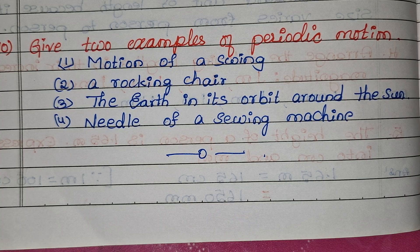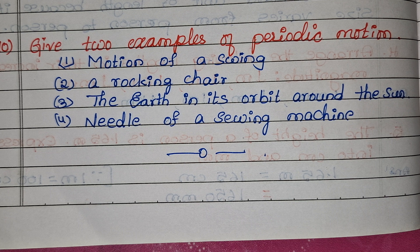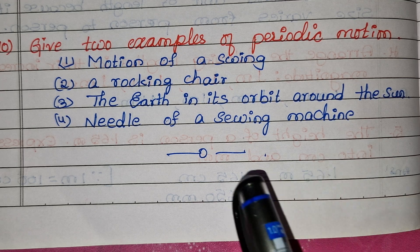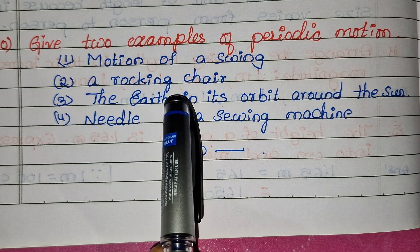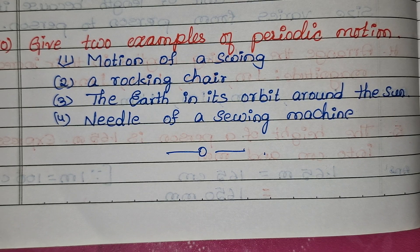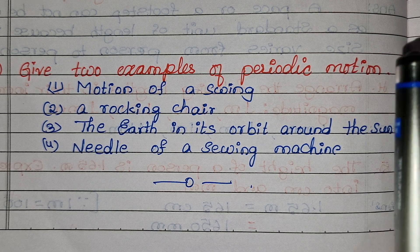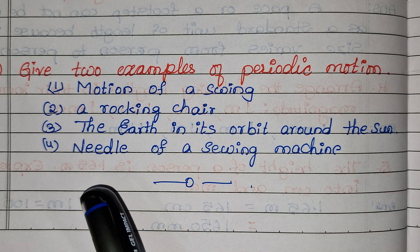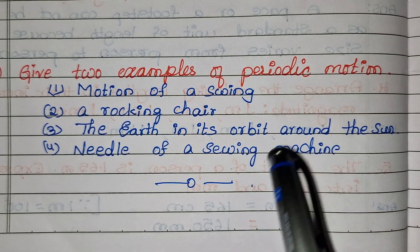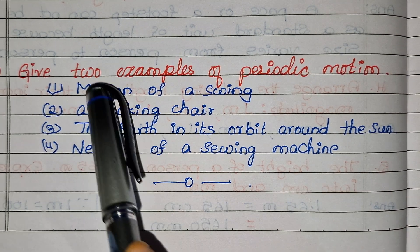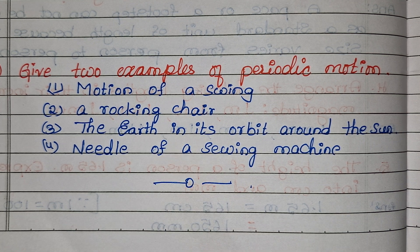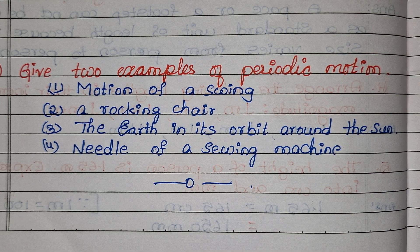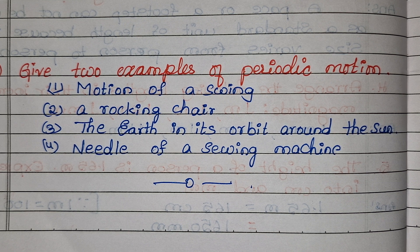The last question: give two examples of periodic motion. You can write any two, such as: the motion of a swing, the motion of a rocking chair, the earth in its orbit around the sun, or the needle of a sewing machine. All of these are examples of periodic motion. Thank you.